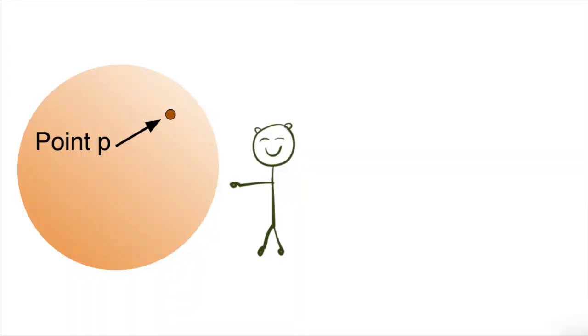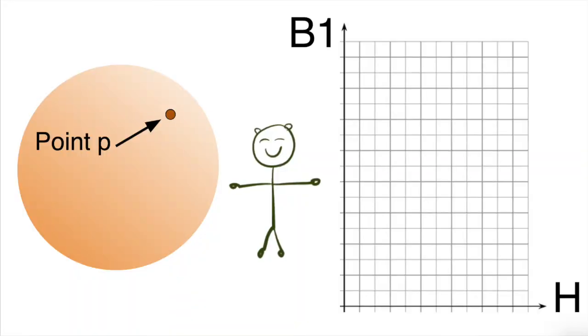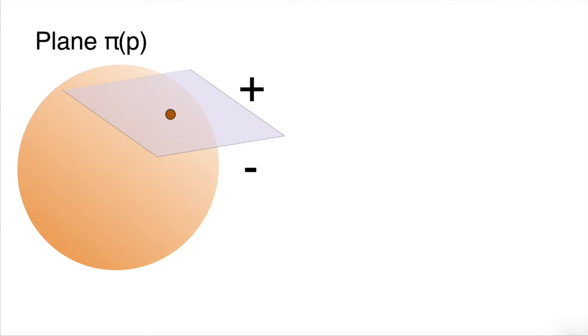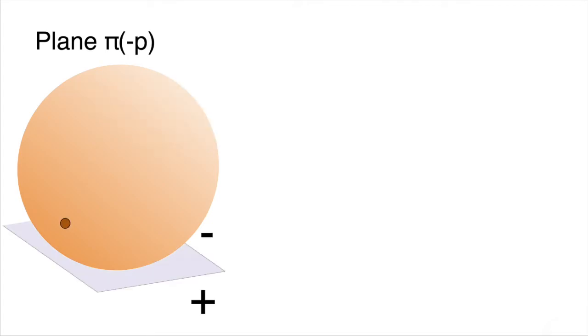let's define a function F that takes in a point P in the 2D sphere space and outputs the volume of B1 and H that are on plane π(P)'s positive side. Note that plane π(P) is the same plane as plane π of negative P, except that their positive and negative sides have been flipped.